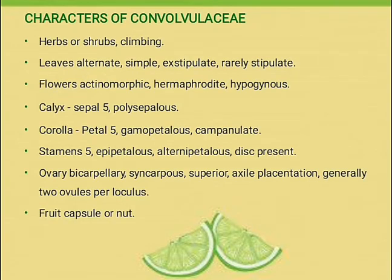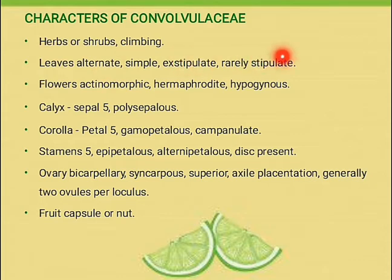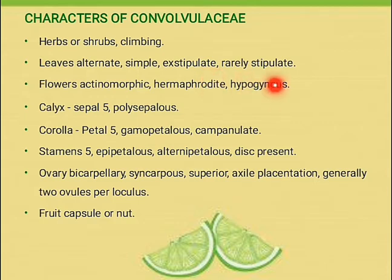Characters of Convolvulaceae: herb or shrub, climbing. Leaves alternate, simple, exstipulate, that means stipule is absent; rarely stipulate, that means stipule is present. Flower actinomorphic, hermaphrodite, that means bisexual flower is present. Hypogynous, that means superior ovary is present. Calyx consists of 5 sepals, polysepalous.